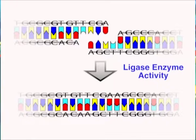Ligases are enzymes that join nucleic acid molecules together. DNA ligases connect DNA fragments by catalyzing the formation of a phosphodiester bond between the 3'-hydroxyl and 5'-phosphate group at a single-strand break in double-stranded DNA. In nature, DNA ligases are essential for joining Okazaki fragments during replication and in the last step of the DNA repair process. There are two types of ligases: DNA ligases and RNA ligases.